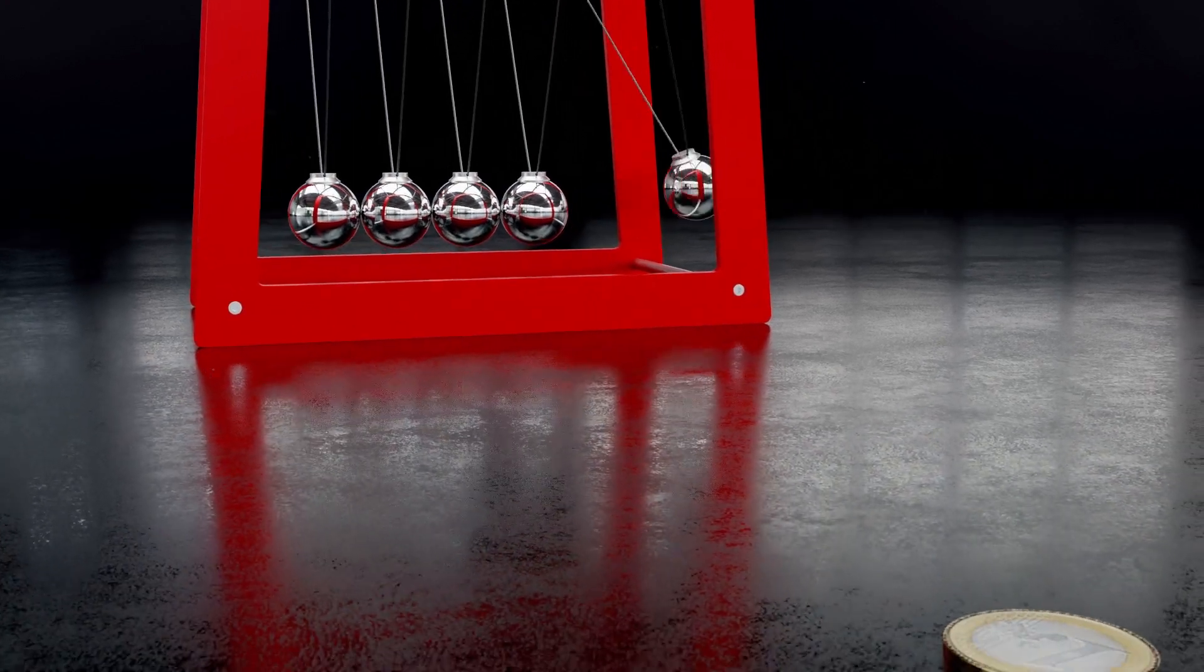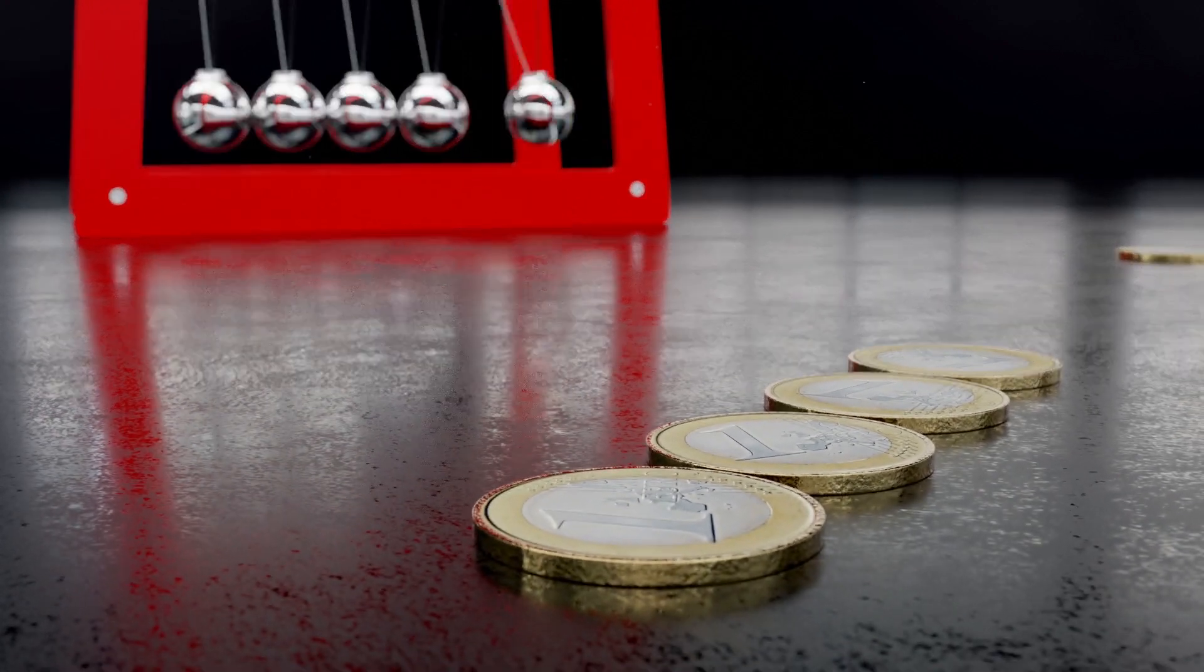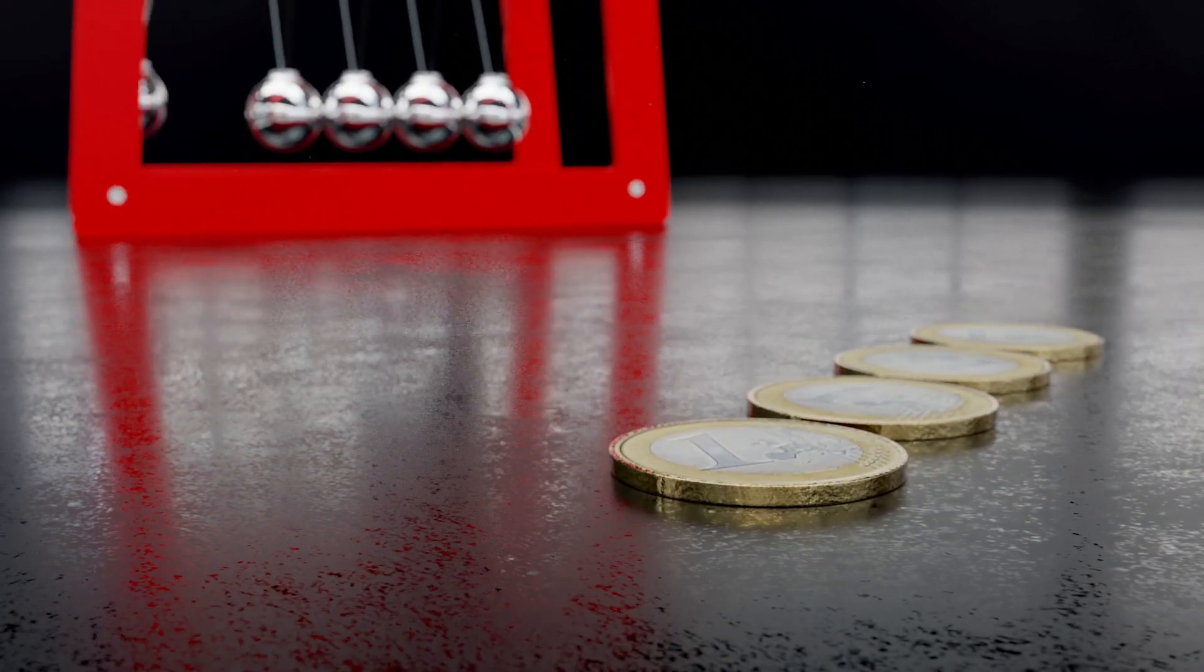The effect of the last ball ejecting with a velocity nearly equal to the first ball can be seen by sliding a coin on a table into a line of identical coins.